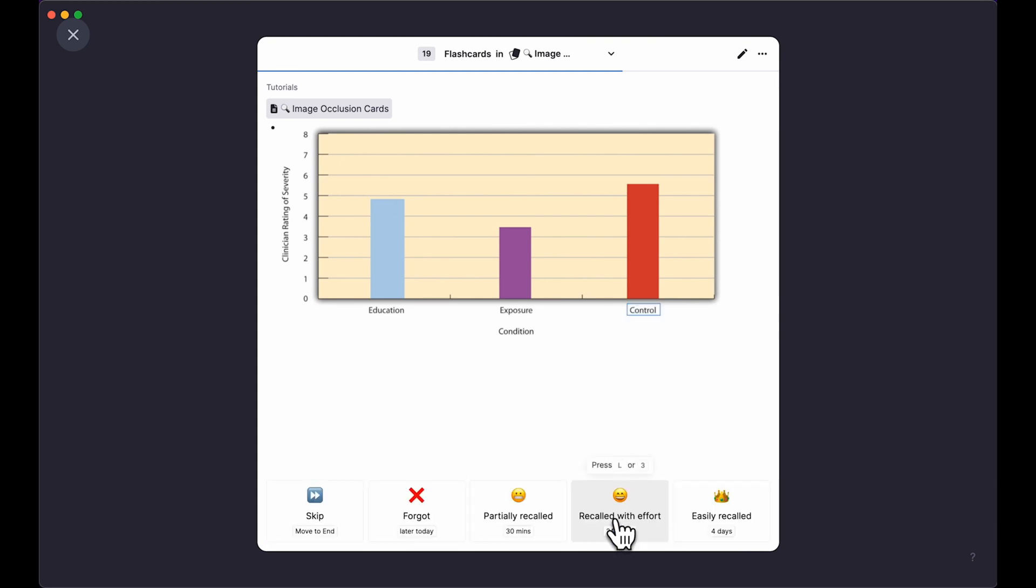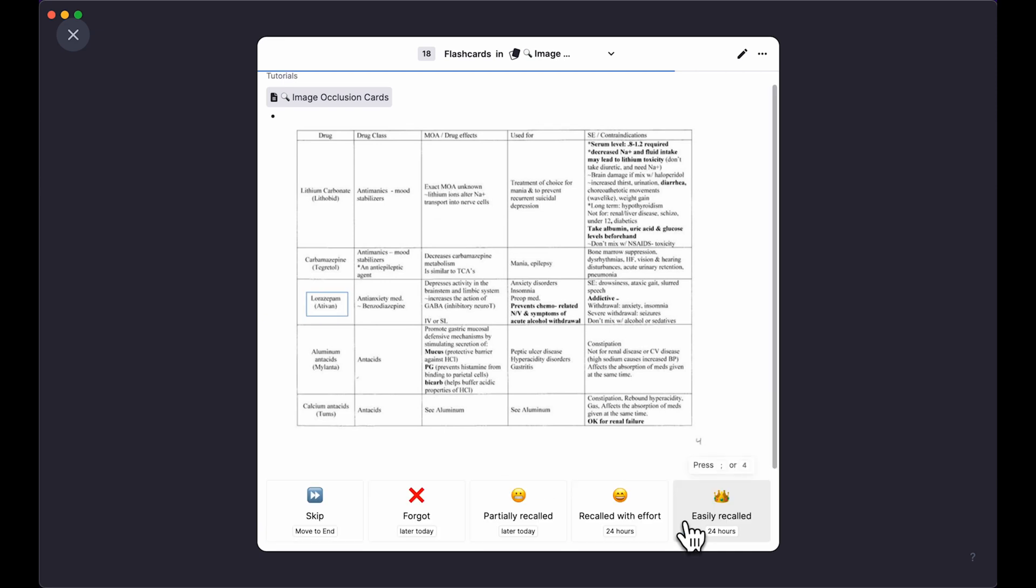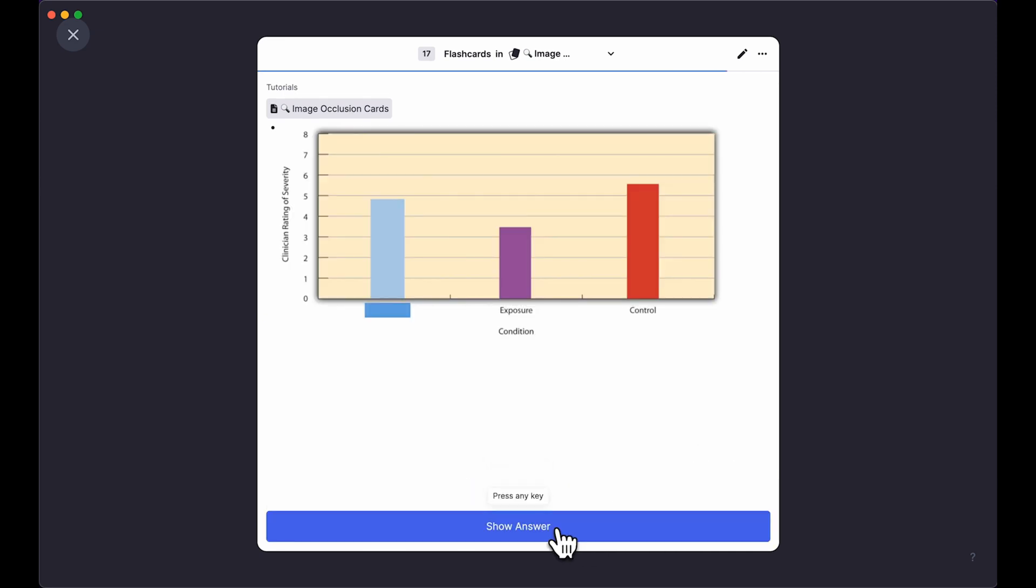Image occlusion cards allow you to test yourself on visual content by hiding certain parts of the image. They're perfect for testing yourself on information in tables, charts, diagrams, and equations.